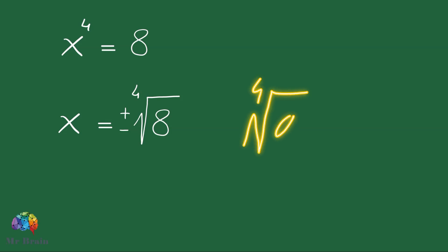The fourth root of a positive number can be written as a number raised to the power of 1 over 4. So the solution of the equation can also be written as positive or negative 8 to the power of 1/4. We have thus found the two solutions.